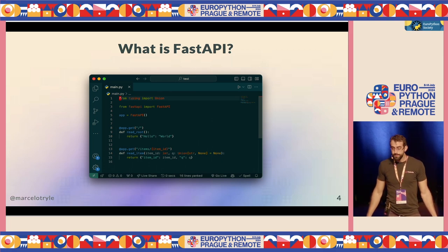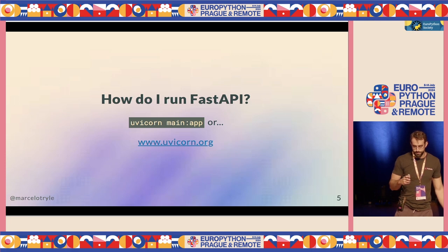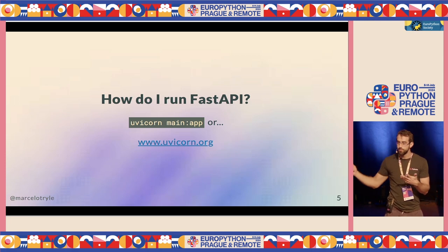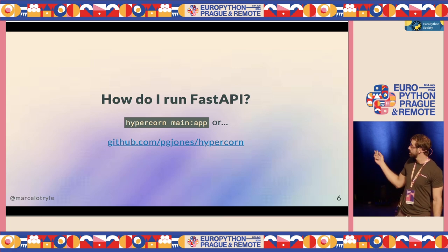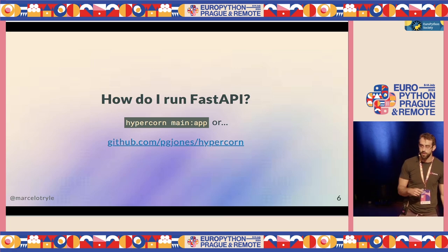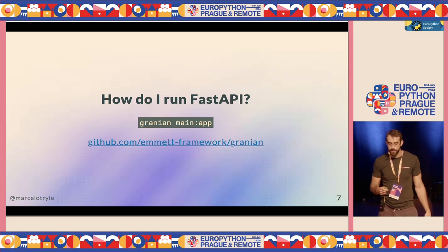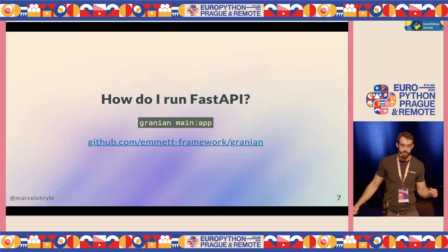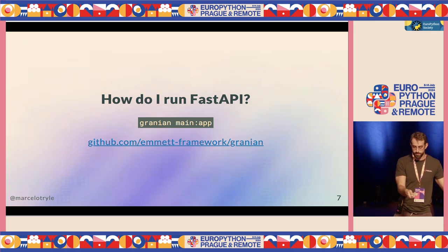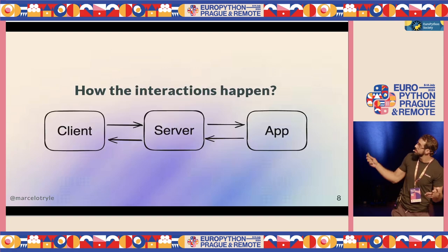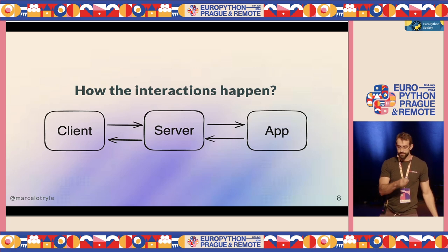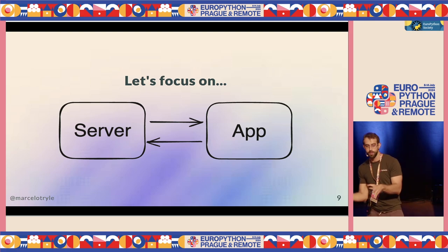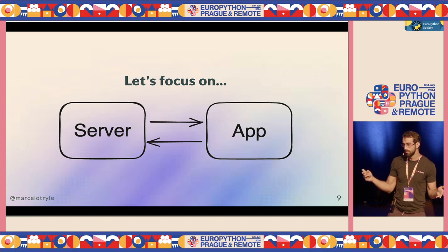FastAPI was created in 2018, and I've been part of the community since 2020. You need a web server to run FastAPI. One of them is Uvicorn — you just run uvicorn main app. There are alternatives: Hypercorn, created by Phil Jones, one of the maintainers of Flask; and Granian, which was created by an Italian guy called Giovanni and is made in Rust. This is pretty much what I'll be talking about — how the data comes in from the client, goes to the server, then the app, and goes back, focusing on the server-to-application internals.